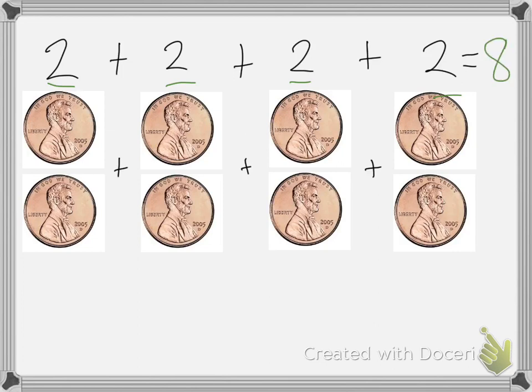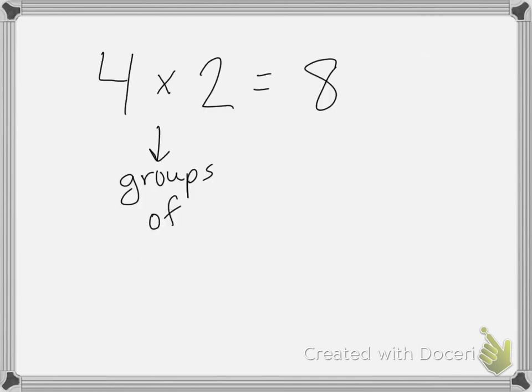Now there's a shorter way of writing 4 groups of 2, and that is 4 times 2. This is called a multiplication symbol, and it is used to say groups of. So you would say 4 times 2 equals 8.